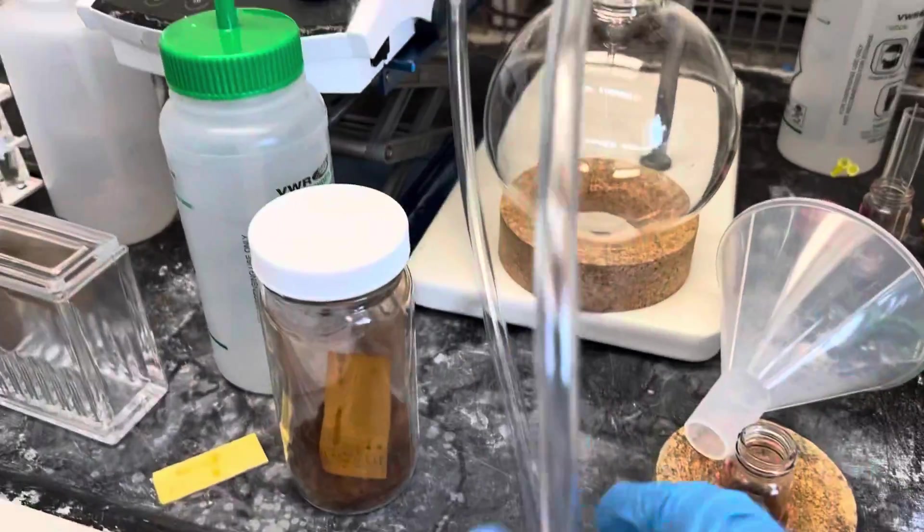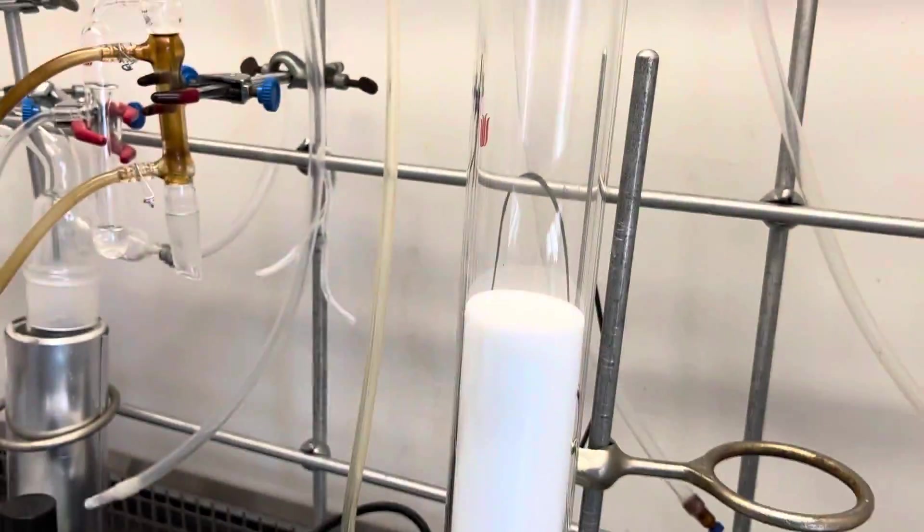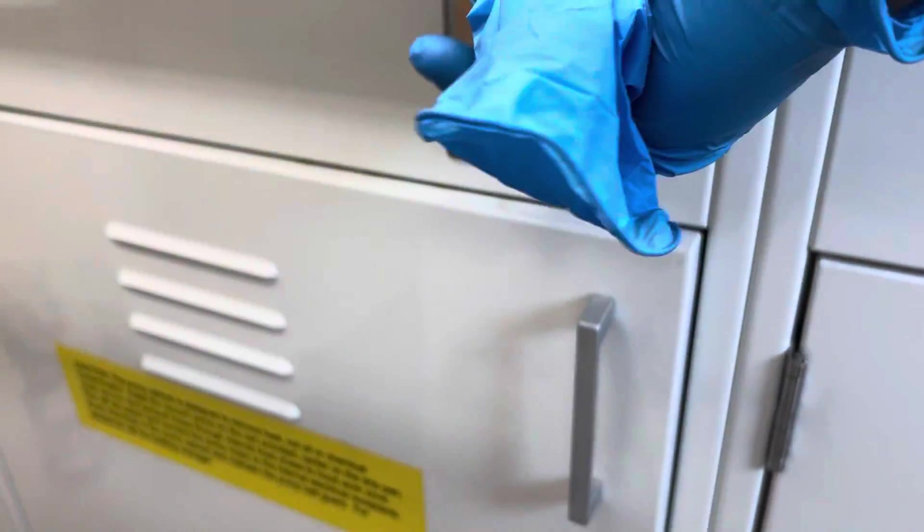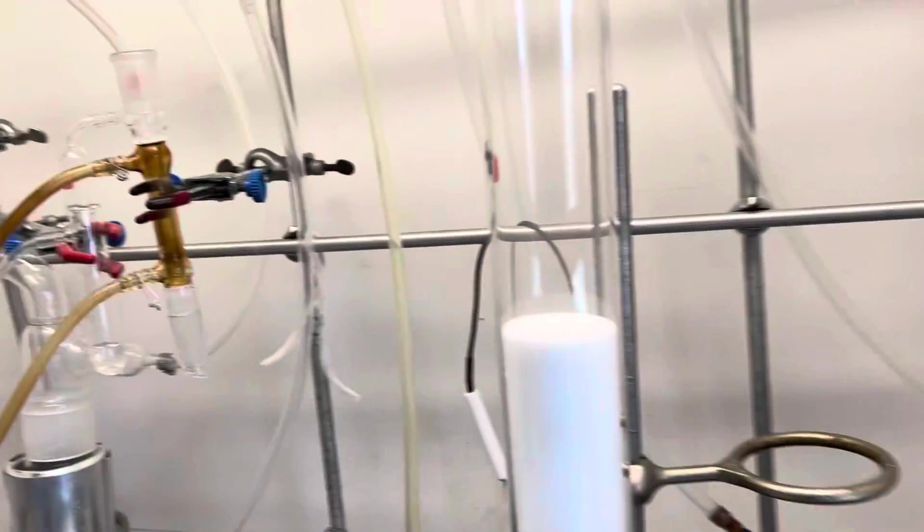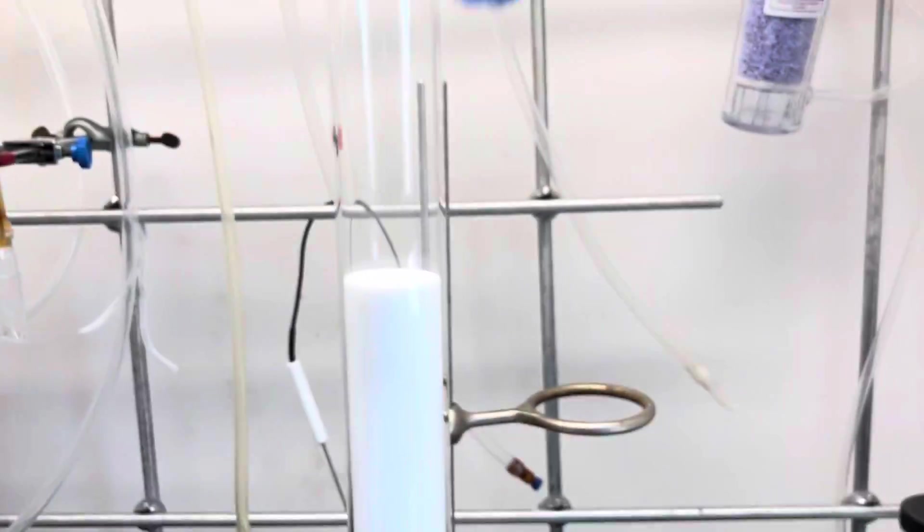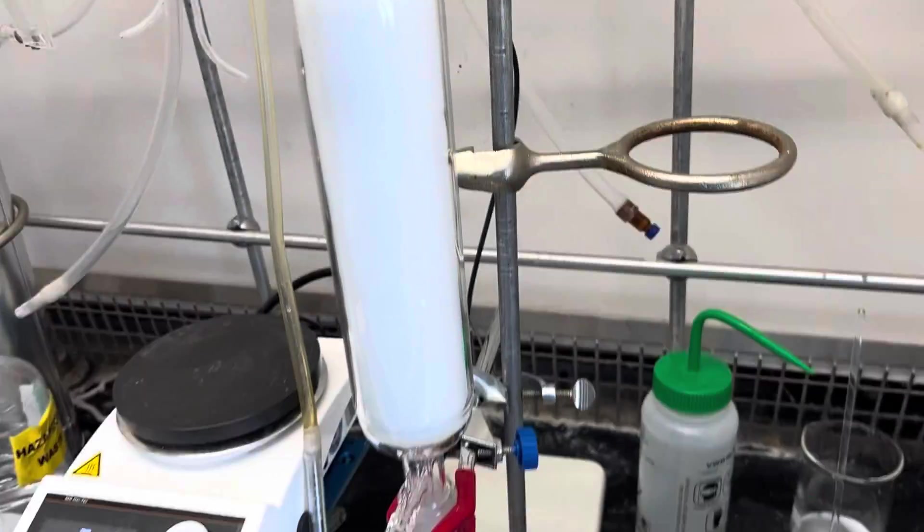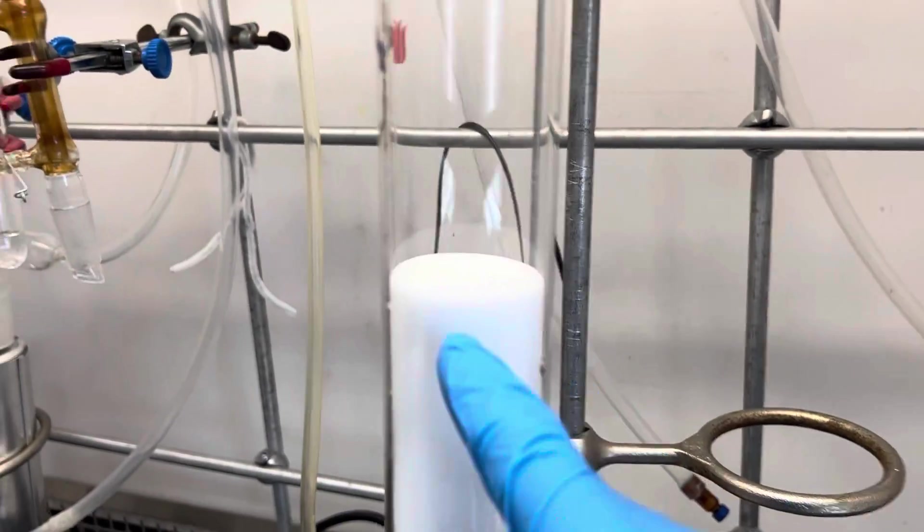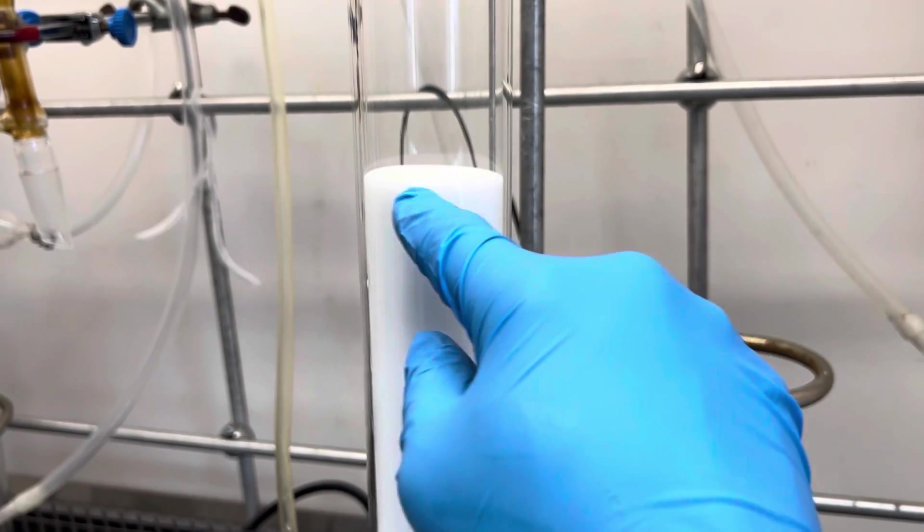Here I put some silica in the column. Now I'm giving the vacuum to make sure that there is no gap between the silica gel, like to make a packed silica column. Packing should be nice.